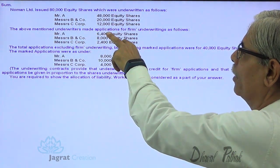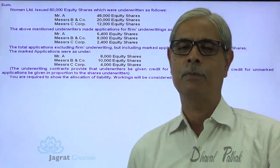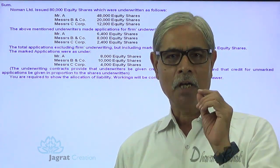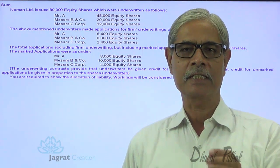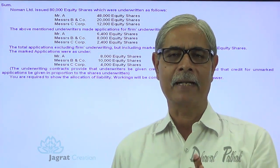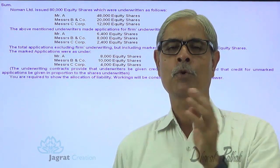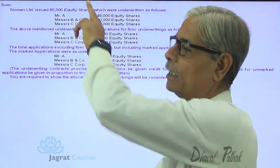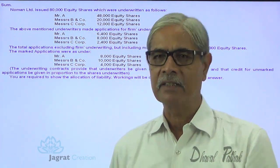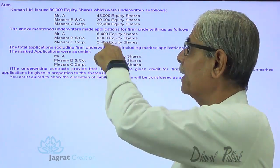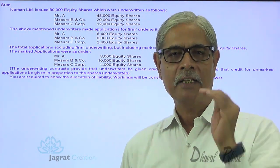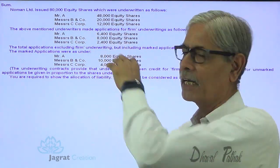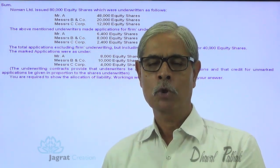The above-mentioned underwriters made an application for firm underwriting. What is firm underwriting? Firm underwriting means the minimum number of shares the underwriters commit to purchase from the company, irrespective of whether the issue is fully subscribed or oversubscribed. Even if 80,000 applications are received from the public, the underwriters still commit to purchase their firm shares from the company.